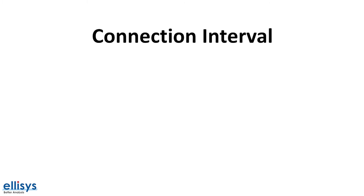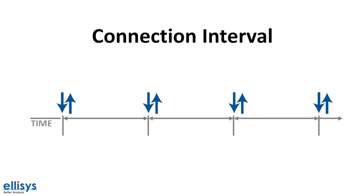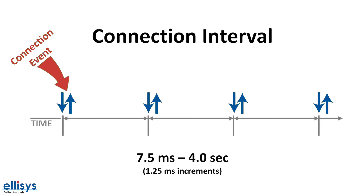First, we have the connection interval parameter, which defines when a connection event occurs. At each connection event, the master starts by sending a packet to the slave. The slave then responds with a data packet and includes any data it needs to communicate back to the master. In the event that it doesn't have any data to send back, the slave is still required to send back something, so it simply sends back an empty packet. The connection interval parameter ranges from 7.5 milliseconds to 4 seconds in increments of 1.25 milliseconds.